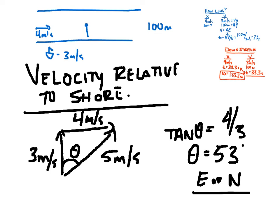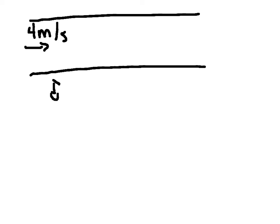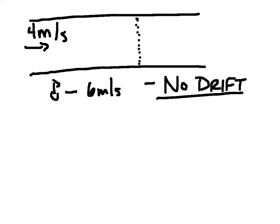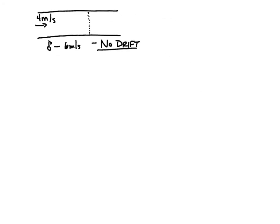I'll leave the resultant displacement up to you — what would it be if you looked at where he started and where he ended? The other thing we're going to look at is a new scenario: the same stream, 4 meters per second current, but now we have a better boat that can go 6 meters per second in any direction, and we want to follow a line straight across with no drift. We want to know what heading we need and what our speed relative to the shore will be.